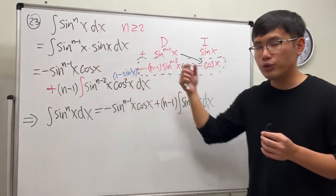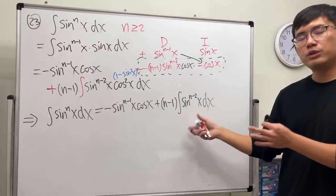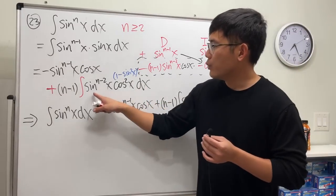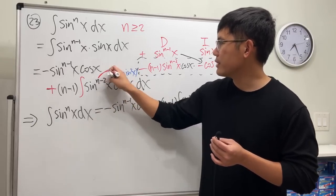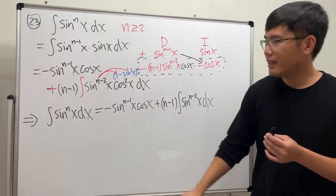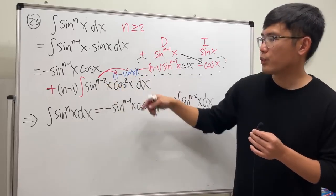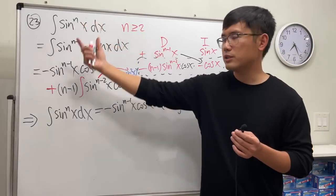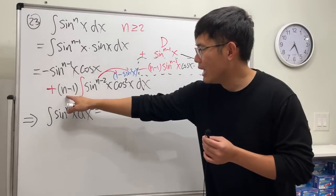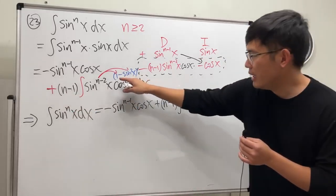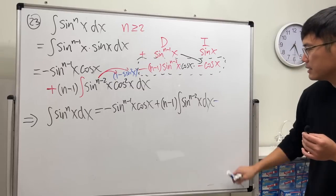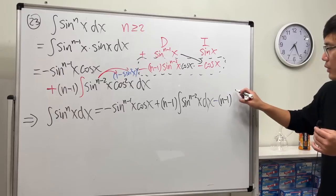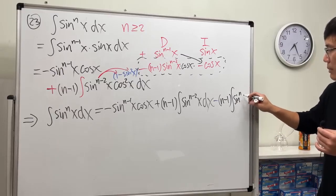This is a power reduction, and we don't have anything extra in this integral. But don't forget the other part — sine to the n minus two times sine squared gives sine to the nth power, which is a repeat from earlier. So we still have a minus n minus one times the integral of sine to the nth power x dx.